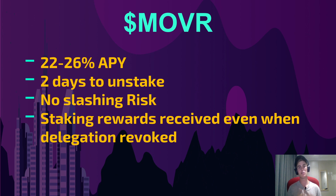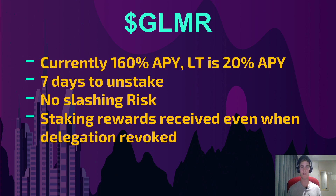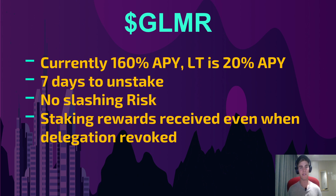Staking rewards are received even when the delegation is revoked. So if you stake with someone and revoke on a Friday because you want to stake with someone else on Sunday, you don't just stop earning rewards — you still earn them even while it's being revoked, which is really nice. For Moonbeam with the ticker Glimmer, the current APY is around 160%. If you get in now, you'll get some juicy staking rewards, but that will trend downwards to around 20% over the long term, likely in the next two to three months. It takes seven days to unstake, so you need to start unstaking the previous Sunday in order to be ready to review and reallocate the following Sunday. Like Moonriver, there's no slashing risk and staking rewards are received even when you revoke your delegation.